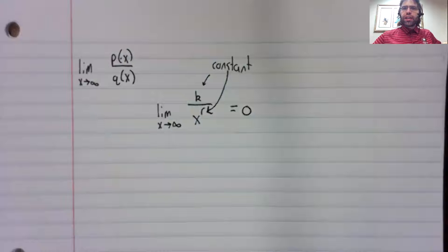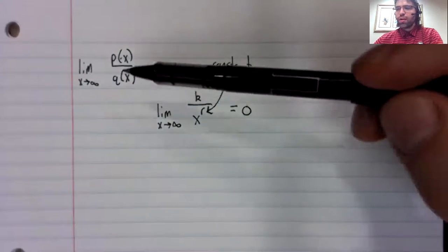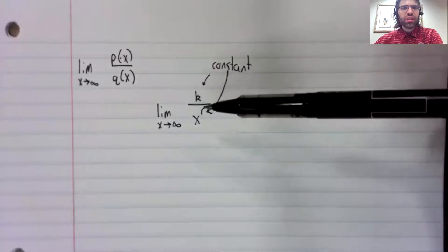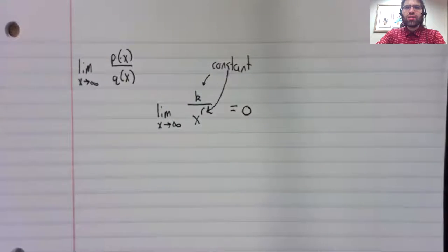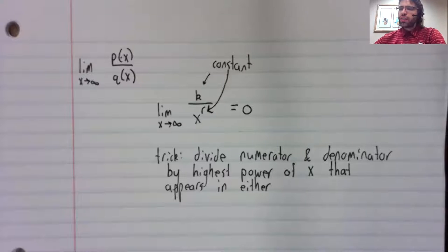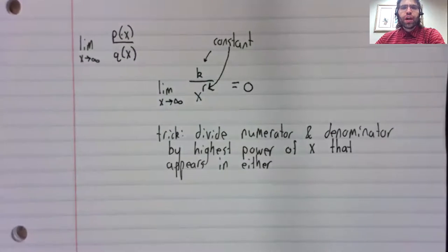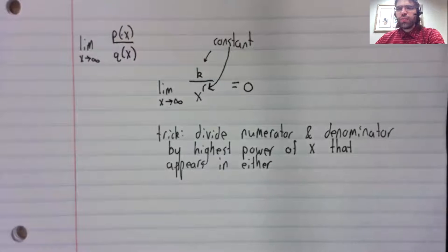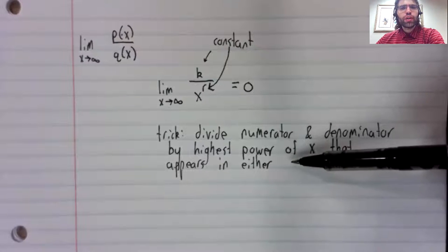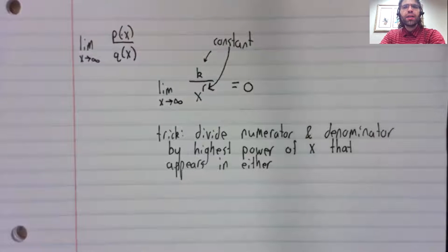The trick we use for finding this limit is based on this. The trick is to take this rational function and divide the numerator and the denominator by the highest power of x that appears in either of them.